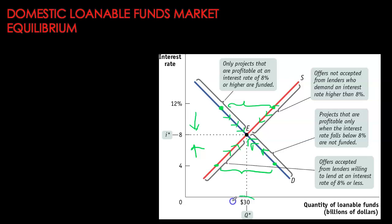At equilibrium, we have 30 billion dollars of funds being exchanged. There are no borrowers at this interest rate who want funds and are not receiving them. Likewise, there are no sellers at 8% who want to lend but are not finding borrowers. Every saver finds a borrower and every borrower finds a saver. So for given demand and supply curves, interest rates will always converge toward the equilibrium interest rate.